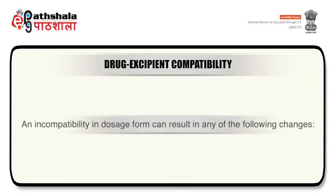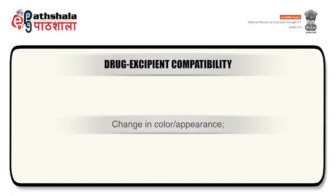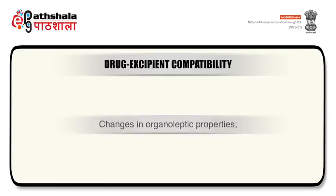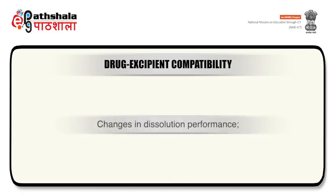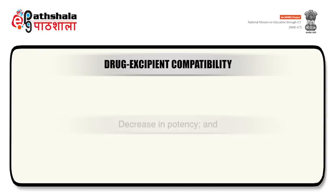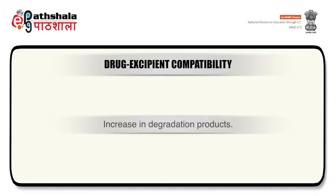An incompatibility in a dosage form can result in any of the following changes: change in color or appearance, change in organoleptic properties, change in dissolution performance, physical form conversion, decrease in potency, and increase in degradation products.